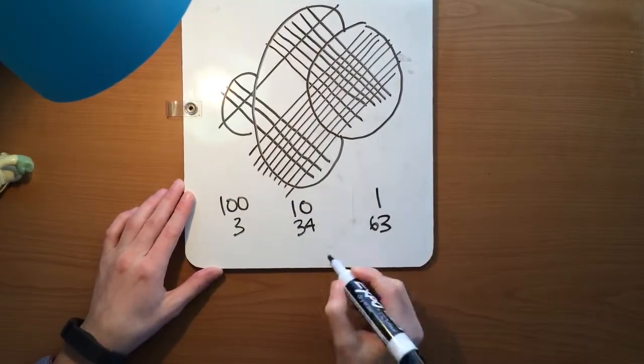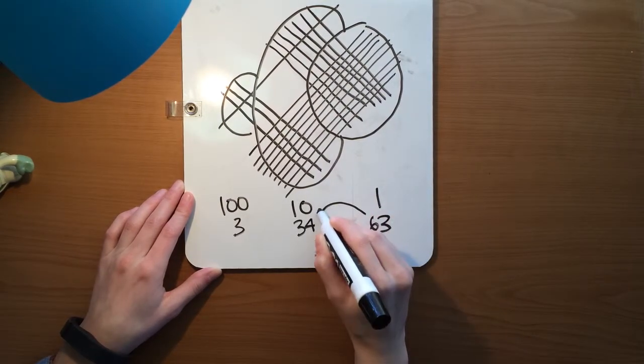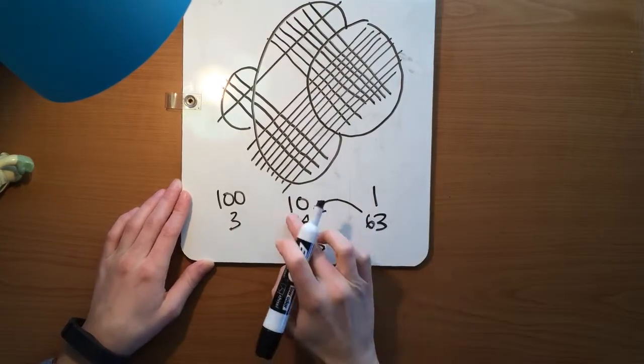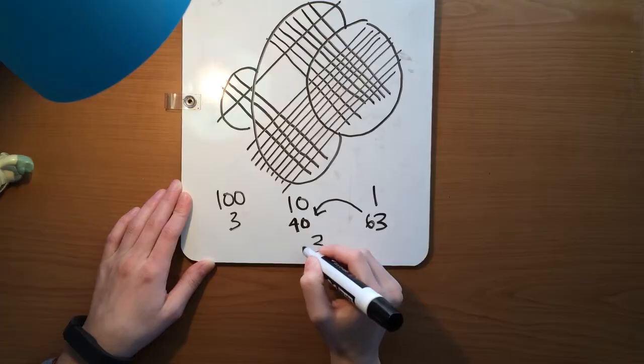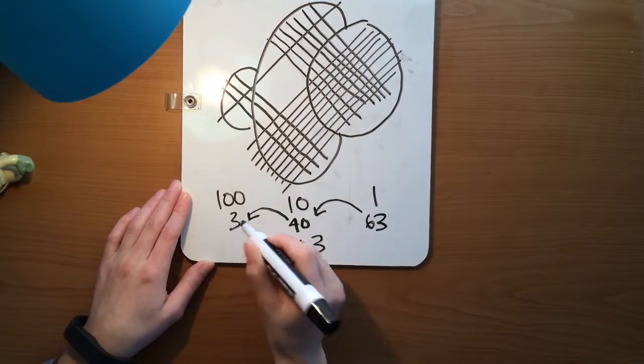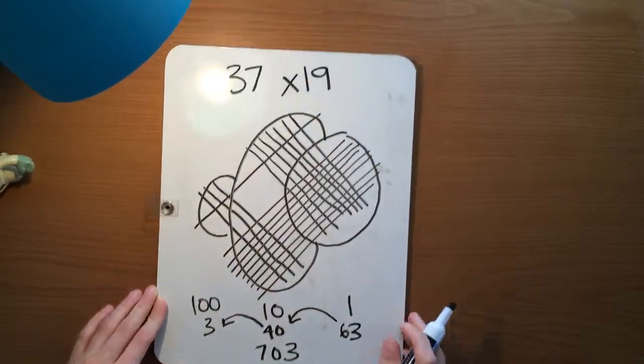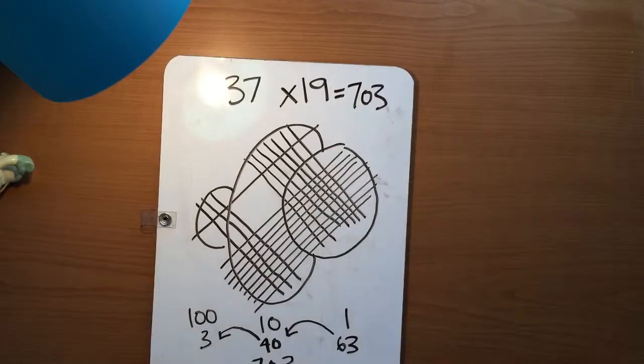Alright, so we'll go ahead and bring the 3 from our 1's. We'll keep the 3 and carry the 6. So if we add 6 to 34, we end up with 40. We'll keep the 0 and carry the 4. And 3 plus 4 will be 7. So that will give us an answer of 703.